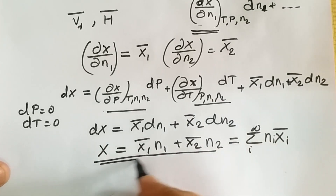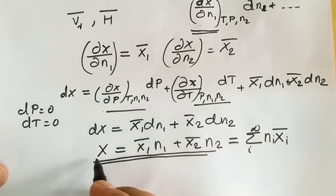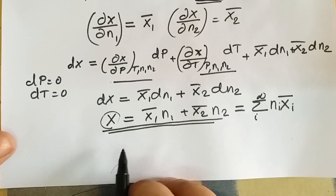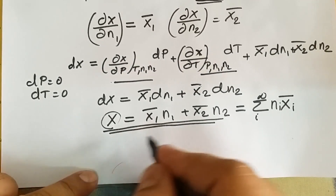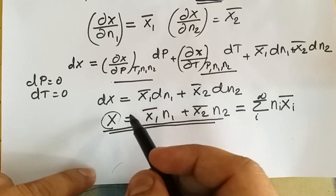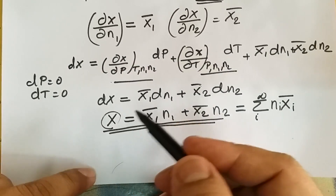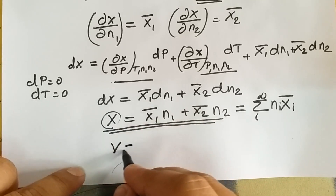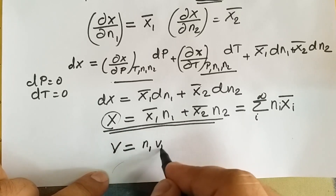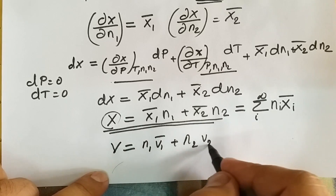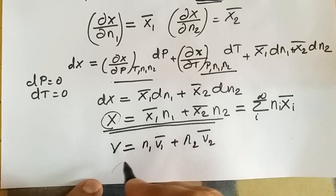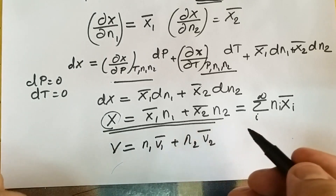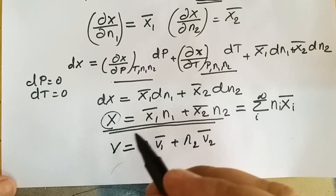This can be generalized and written as: X = Σᵢ nᵢ·x̄ᵢ. This is the general equation for calculating the molar property from partial molar properties. For example, if we are mixing methanol and water and we know their partial molar volumes, then the total volume V can be determined as: V = n₁V̄₁ + n₂V̄₂. Any other quantity can also be determined in the same way.